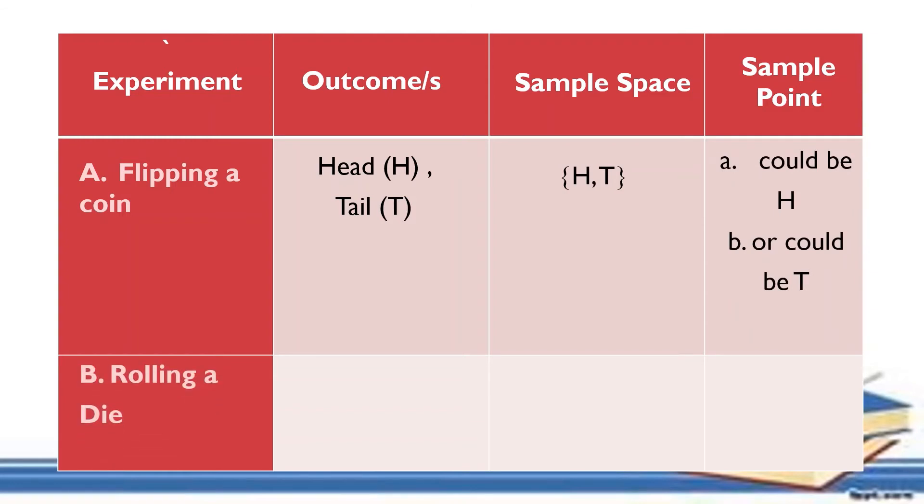Now, rolling a die. Rolling a die, we have 1, 2, 3, 4, 5, 6. For the sample space, it is written again in the set or we may call this one as bracket. So, you write the outcomes. That is the sample space. And for the sample point, you will choose one of the given sample space. It's either 1, 2, 3, 4, 5, or 6.